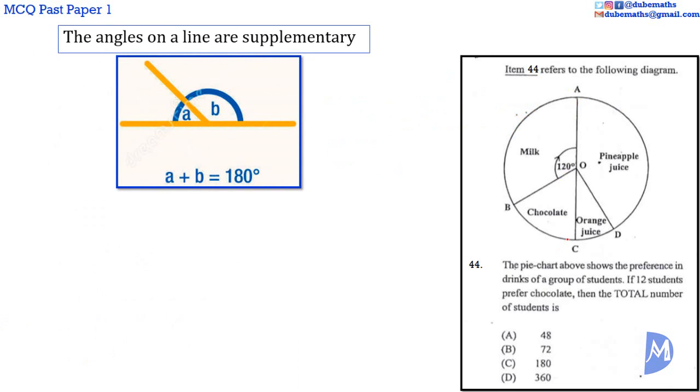Question 44. In this pie chart, AOC is a straight line. We know that a straight angle is equal to 180 degrees. Or, the angles on a line are supplementary. That is, the angles on a line add up to 180 degrees.